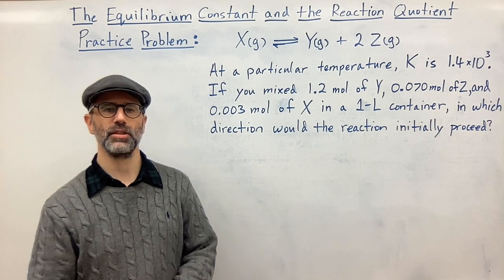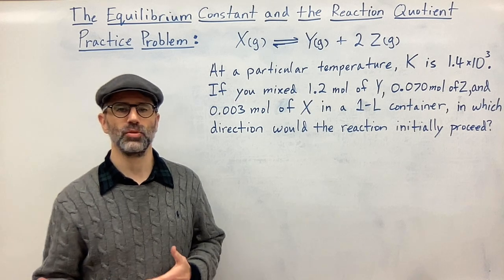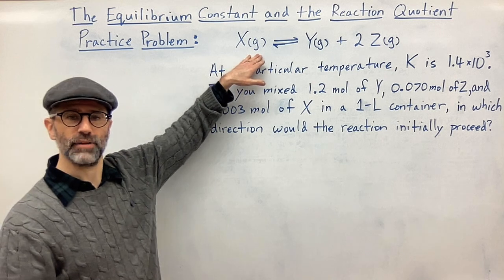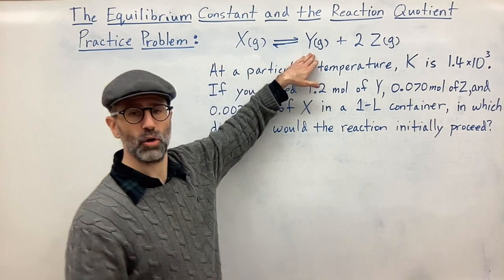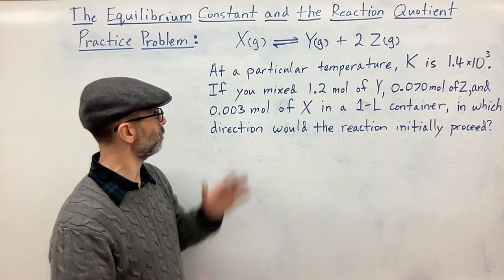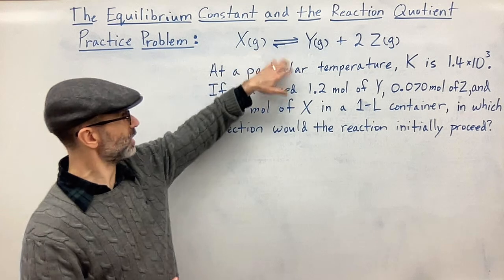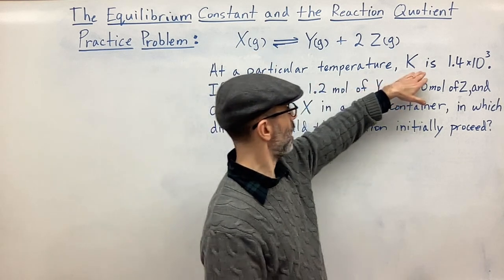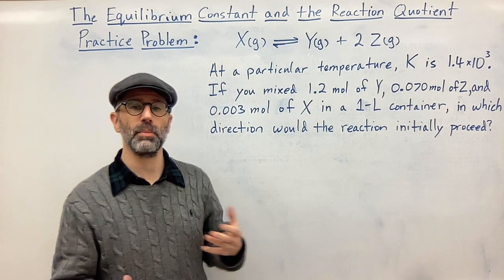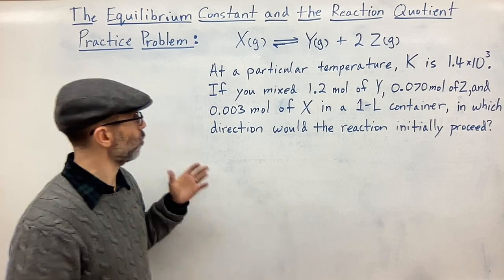So here we're given an equation where gaseous X is in equilibrium with gaseous Y and Z. One mole of X will yield one mole of Y and two moles of Z in this balanced equation. The problem tells us that this reaction at a particular temperature has a K value equal to 1.4 times 10 to the third.